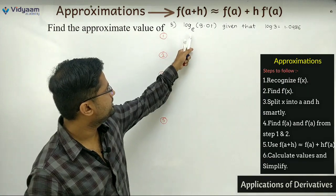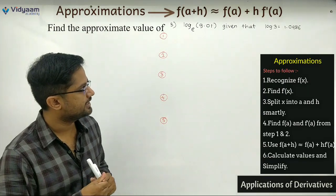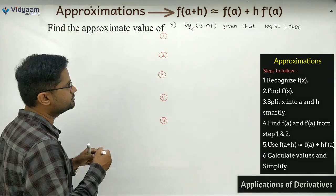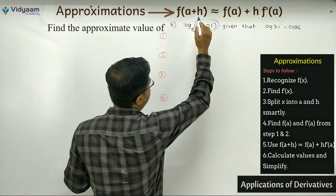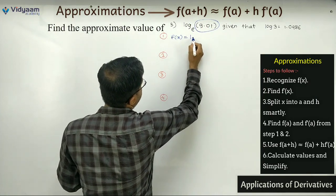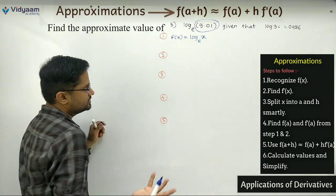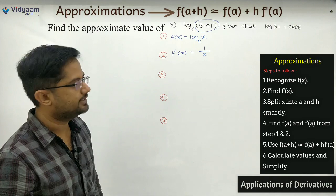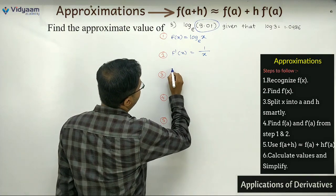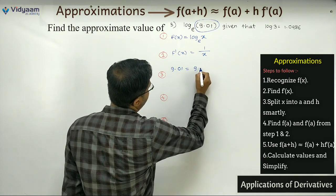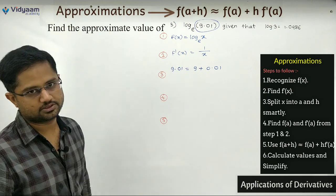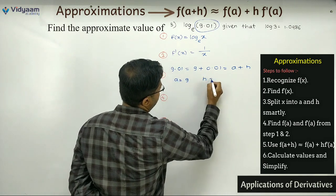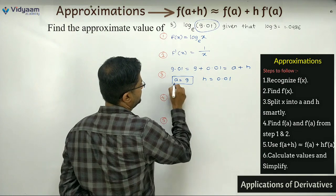Third sum: find log base e of 9.01, given that log 3 = 1.0986. We use the same approach. Assume the term as x, so f(x) = log base e of x, which is simply log x. Next, f'(x) = 1/x. Now break 9.01 as 9 + 0.01, giving a = 9 and h = 0.01.